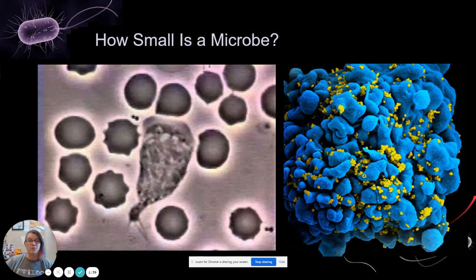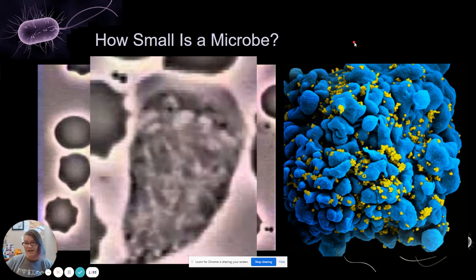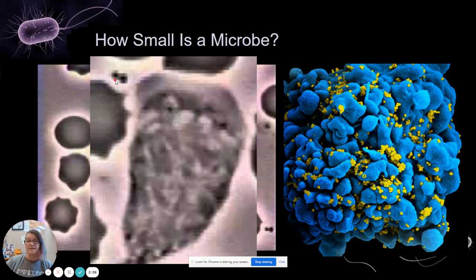This large blue blob is a white blood cell called a T cell, and each of these tiny yellow dots is an HIV — human immunodeficiency virus — particle. If I scale the white blood cell to match the other image, you can see the bacteria are much larger than the viruses, which are single particles about the size of my laser pointer dot. You can fit a lot of tiny virus particles inside a single bacterium.